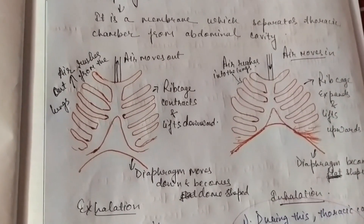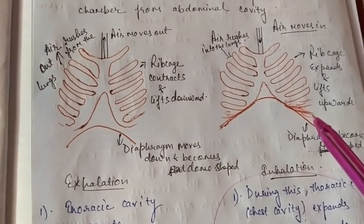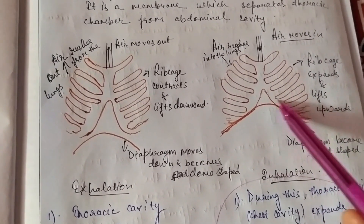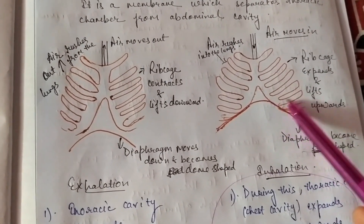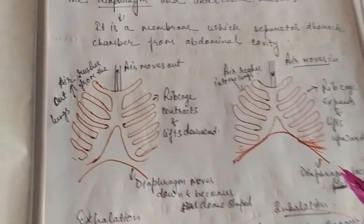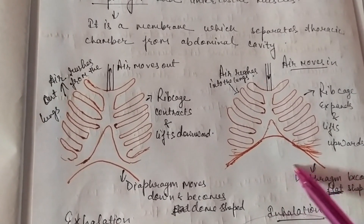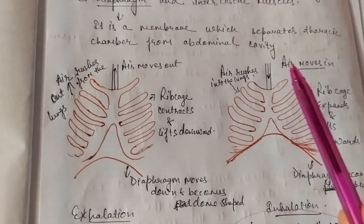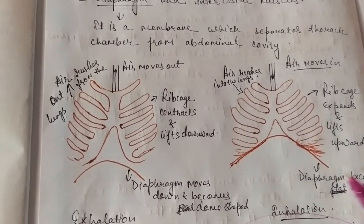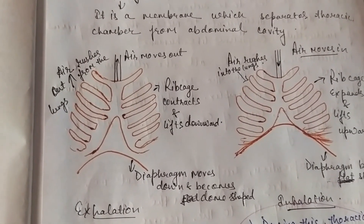In the case of inhalation, when any person takes the air in, the rib cage expands and lifts upwards. As a result, the volume of the lungs increases. The diaphragm becomes flat. Therefore the volume of the lungs increases and the air enters into the lungs.